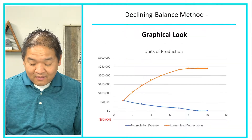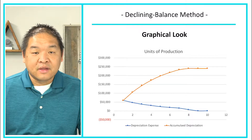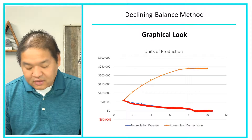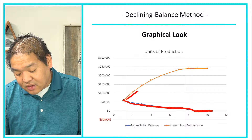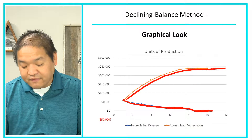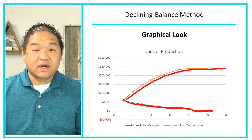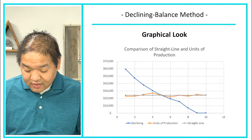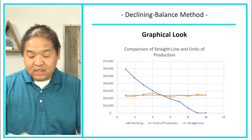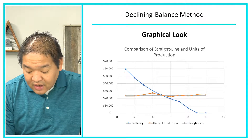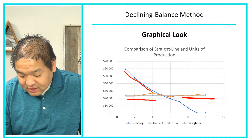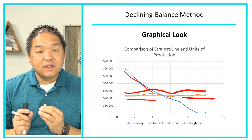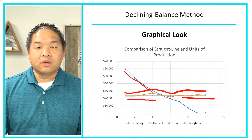Looking at the graphical representation, declining balance looks very different from the previous two methods. Depreciation expense shows a steep drop-off and then falls to zero once we stop depreciating. Accumulated depreciation climbs steeply at first, then levels off at $240,000 because we can't take any more depreciation. Comparing all three methods — declining is very steep, straight line is obviously straight, and units of production varies based on output.